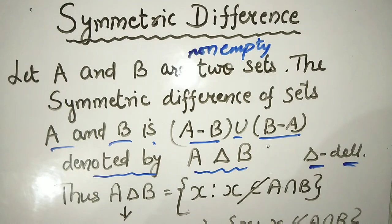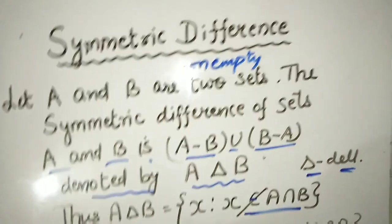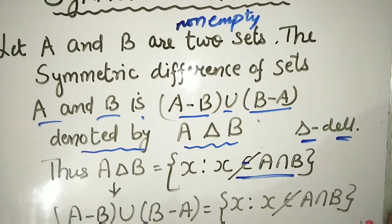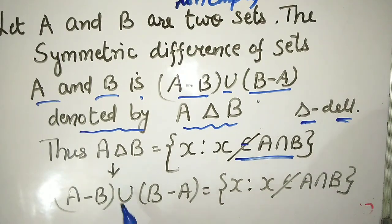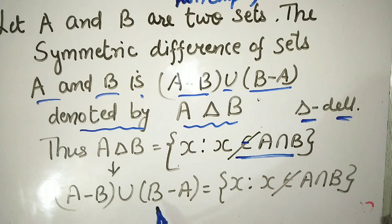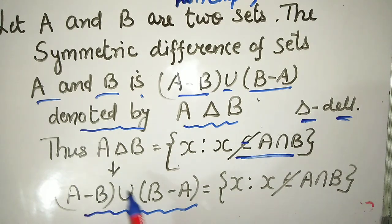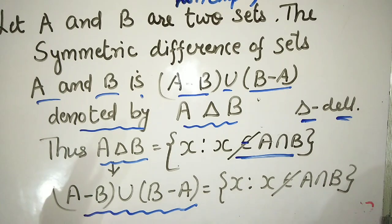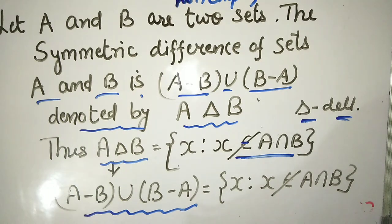The definition of A del B is: the set of x such that x does not belong to A intersection B. Whenever you have A del B, it means the intersection part does not belong. So in symmetric difference, you remember that the intersection part will not belong. The clarification of this will be shown with a Venn diagram.